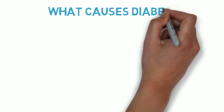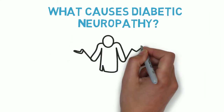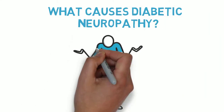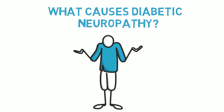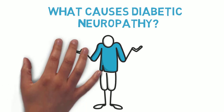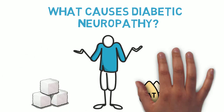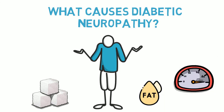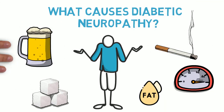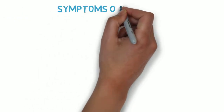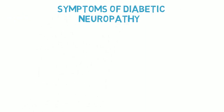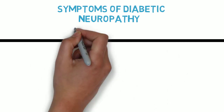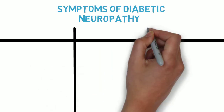The exact mechanism of how diabetes causes nerve damage is still not clear, but some possible causes include high blood sugar, high levels of fat in the blood, and other risk factors such as high blood pressure, smoking, and excess alcohol consumption. The symptoms of diabetic neuropathy can vary depending on which nerves are affected.